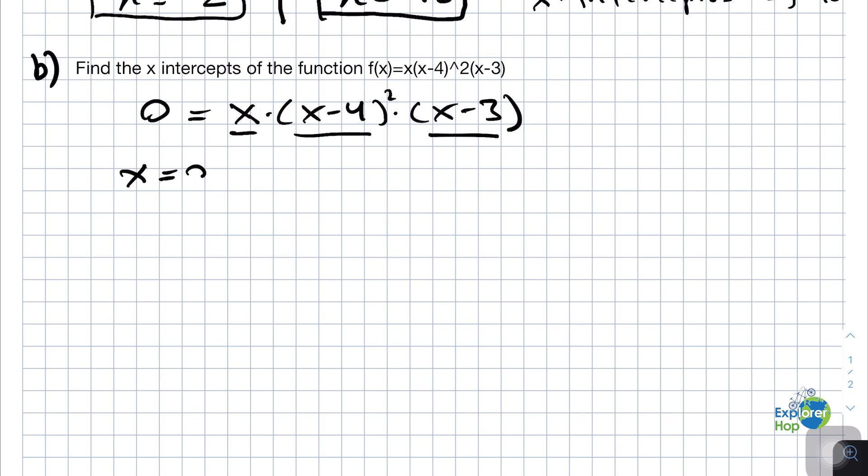Therefore, x equals 0, which will give us this one. Then let's try (x-4)² equals 0.